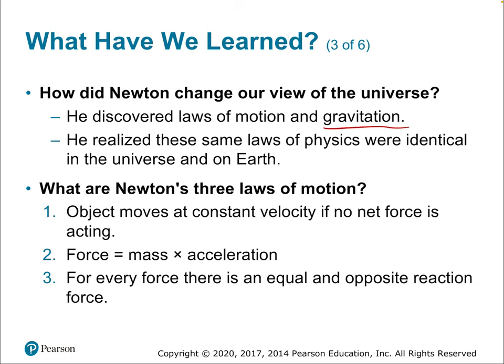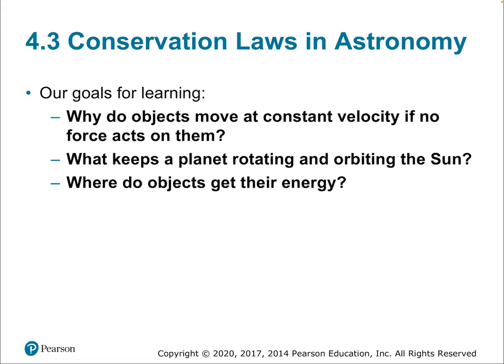So what are Newton's three laws? Let's recap. The first: objects move at constant velocity if no net force is acting on them — and that constant velocity can be zero. The second: force equals mass times acceleration. The third: for every force, there's an equal and opposite reaction force. There are also some other laws in astronomy — not just Newton's three, as you know from Kepler's three laws as well. We're going to talk about some conservation laws in the next video, so please check out the video for section 4.3.